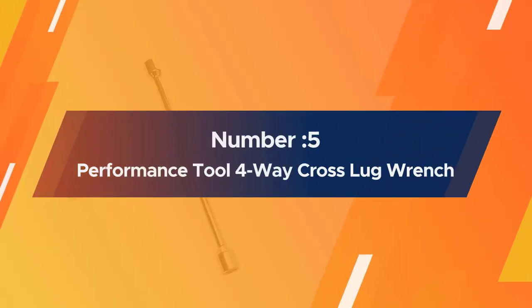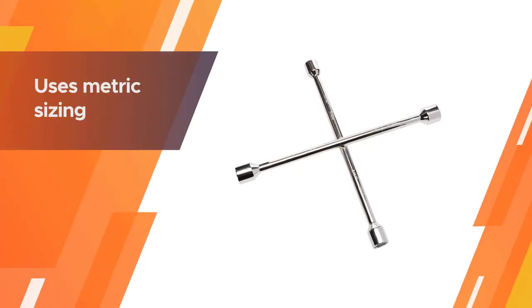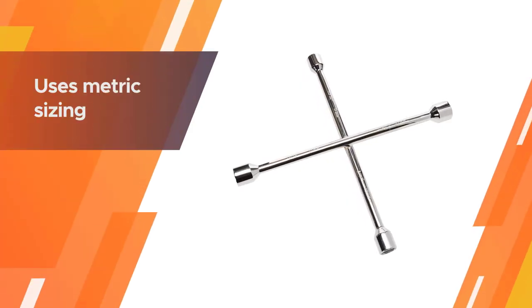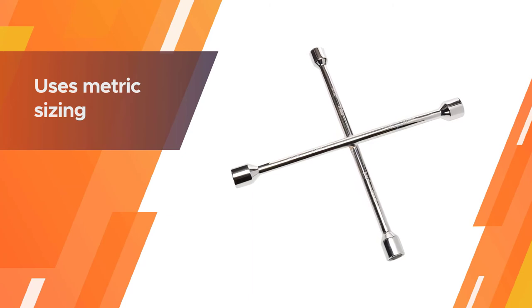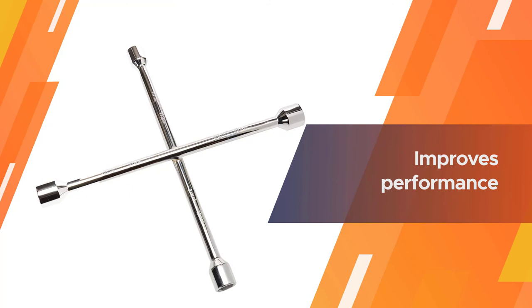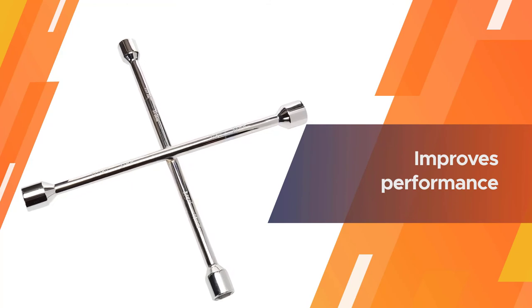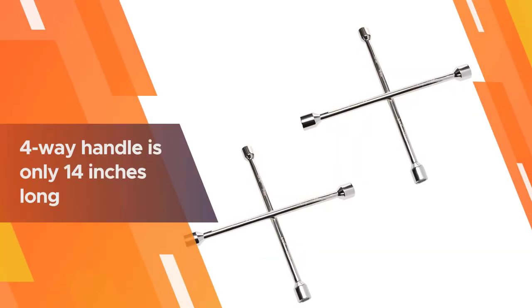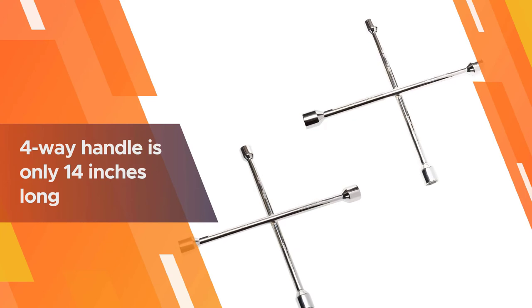Number five: Performance Tool 4-Way Cross-Lug Wrench. The Performance Tool 4-Way is a good solution if you have vehicles that use multiple lug sizes. Performance Tool uses metric sizing which improves performance and reduces marring and rounding off your metric lugs, although the actual measurements are closer to American SAE than true metric equivalents.